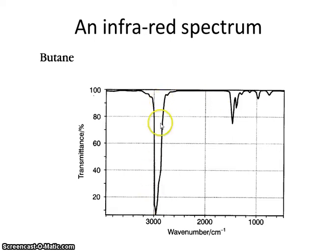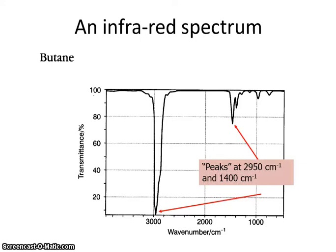It's only at a certain fixed wavenumber that we get a big drop in transmittance. And that drop is described as a peak, even though it looks much more like a trough to you. There are also some smaller peaks over here. So we can actually use the wavenumber at which that peak occurs and we can describe it fairly precisely by looking on the x-axis here. So here we've got peaks at these particular wavenumbers. It's very important when you're describing peaks that you include the unit of wavenumbers, centimeters to the minus one.